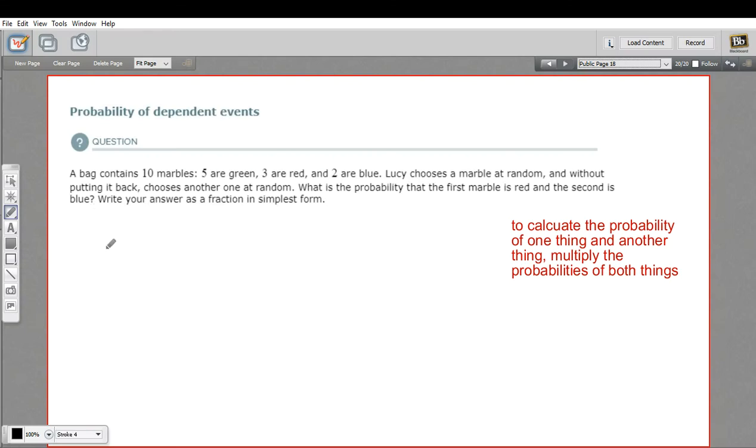In this problem, we are calculating the probability of a couple of events that are called dependent events. When you have more than one event and you want the probability that the first thing happens and the second thing happens, you multiply those probabilities. The probability of the first thing times the probability of the second thing. When they're dependent events, what that means is that the first item changes the probability of the second item.